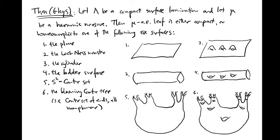Then mu almost every leaf is either compact or homeomorphic to one of the following six surfaces: the plane, the Loch Ness monster, the cylinder, the ladder surface, the sphere minus a Cantor set, or the blooming Cantor tree. This last surface is the non-compact surface with a Cantor set of ends, all non-planar.